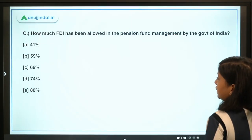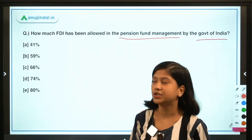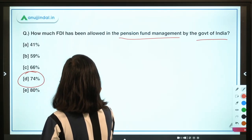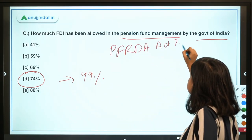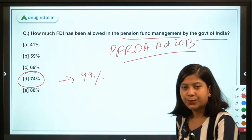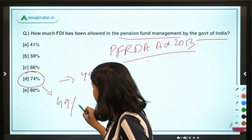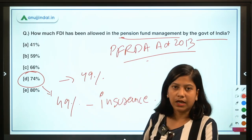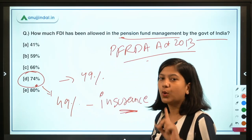The second question: how much FDI has been allowed in pension fund management by the Government of India? The answer is 74%. Earlier the limit was 49%. The Pension Fund Regulatory Development Authority Act 2013 has been amended to raise this FDI limit. Earlier this year, the insurance sector's FDI limit was also raised to 74% from 49%. Your task: mention in the comments which act was amended to bring the FDI limit in the insurance sector.